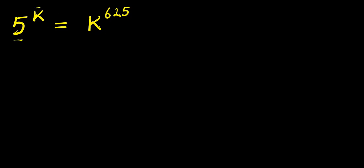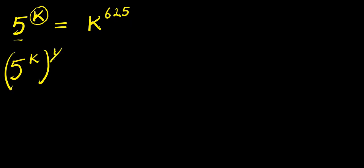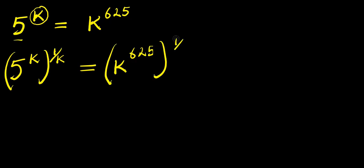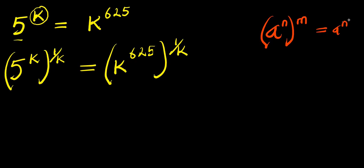Let's eliminate this k. I have 5 to the power k, and this is raised to the power of 1 over k. We do the same thing on the right side: k to the power 6/5, also raised to the power of 1 over k. Now, if you have a to the power n, raised to the power n, it equals a to the power n times n.